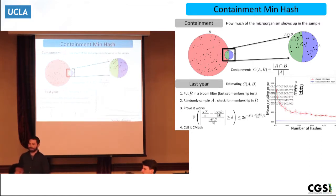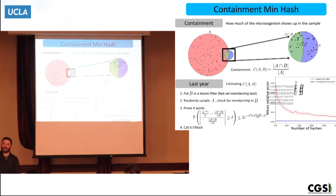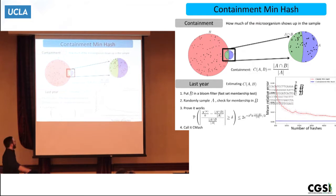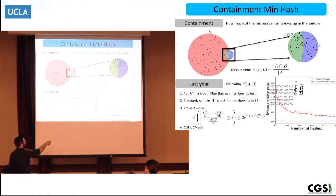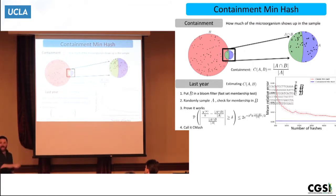The formulas do take into consideration that you sampled — and the number of times you sampled is k times. It also takes into consideration the bloom filter. As you can see, it's e to the minus k right there. So if k is really big and you sample a lot, your probability of deviating from the true value is exponentially small and gets smaller. So it behaves in how we'd expect.